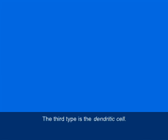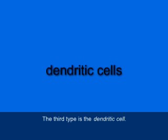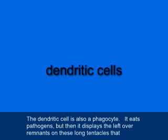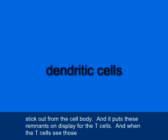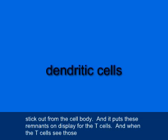The third type is the dendritic cell, which is also a phagocyte. It eats pathogens but then displays the leftover remnants on long tentacles that stick out from the cell body. It puts these remnants on display for the T-cells, and when the T-cells see those, they can wake up and realize that there's something new out there that's been invading the body.